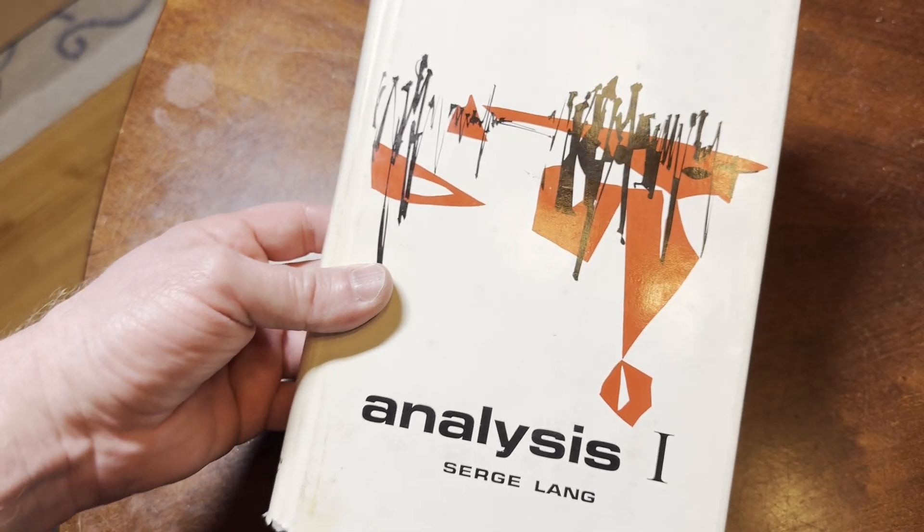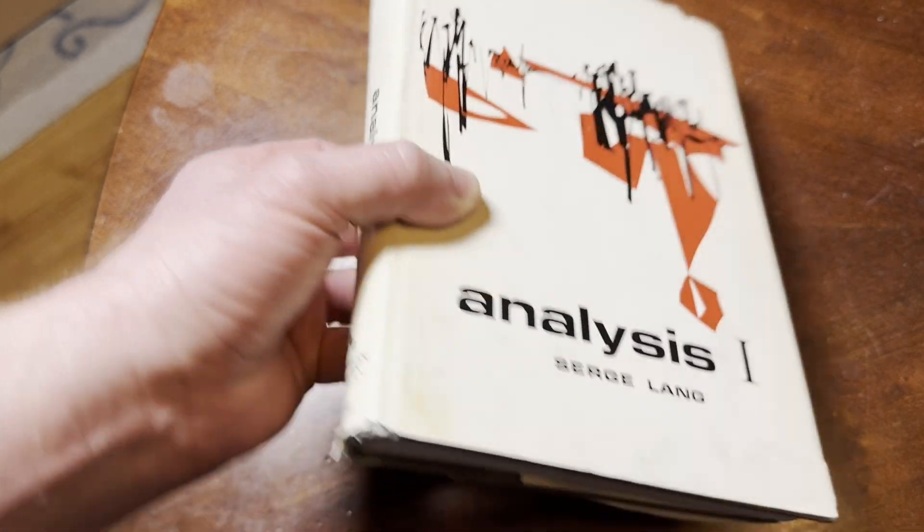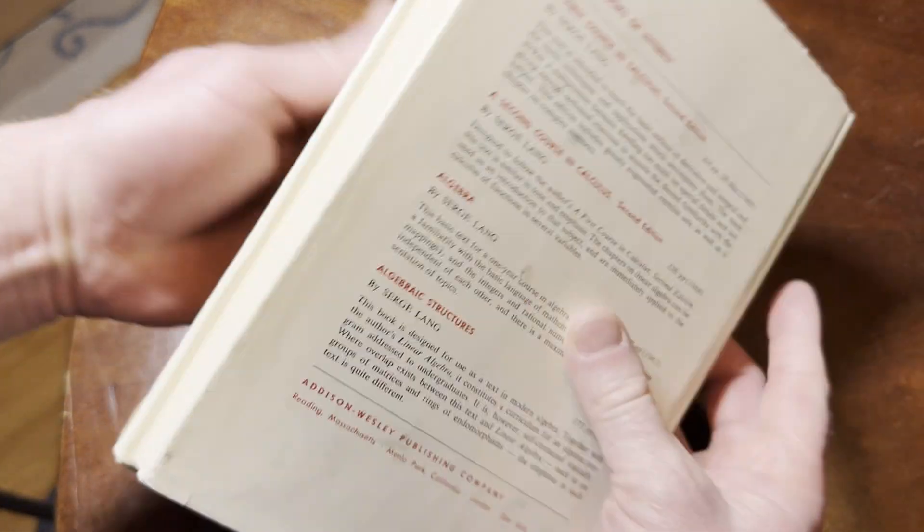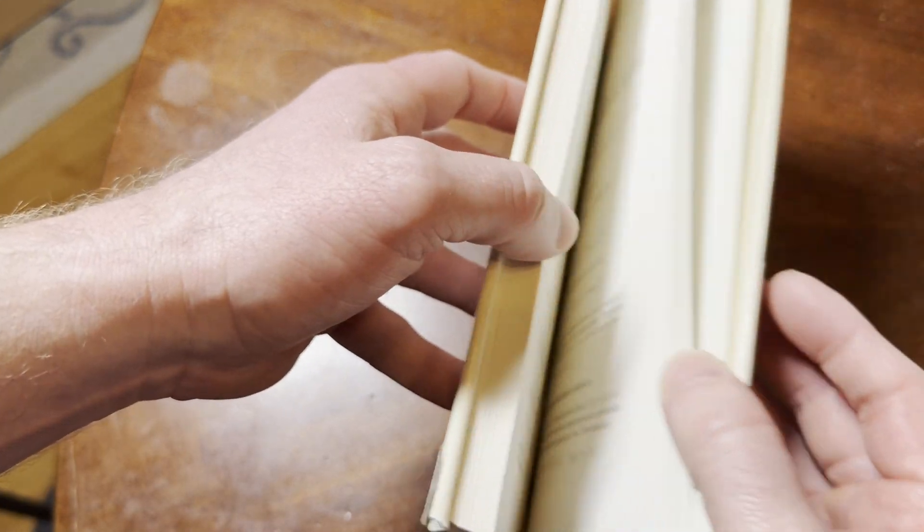Hi everyone. In this video, I want to show you a book I have. It is called Analysis 1. It was written by Serge Lang. I'm going to be very careful with this copy because this is a first edition with a dust jacket. So let me just carefully open it up.